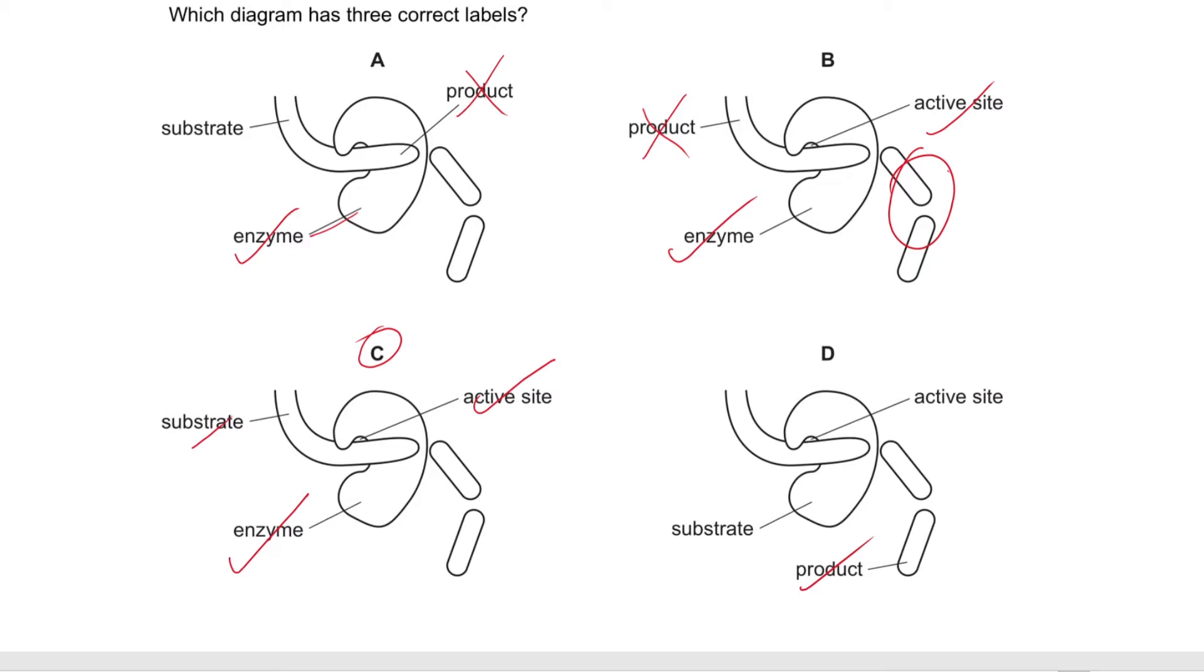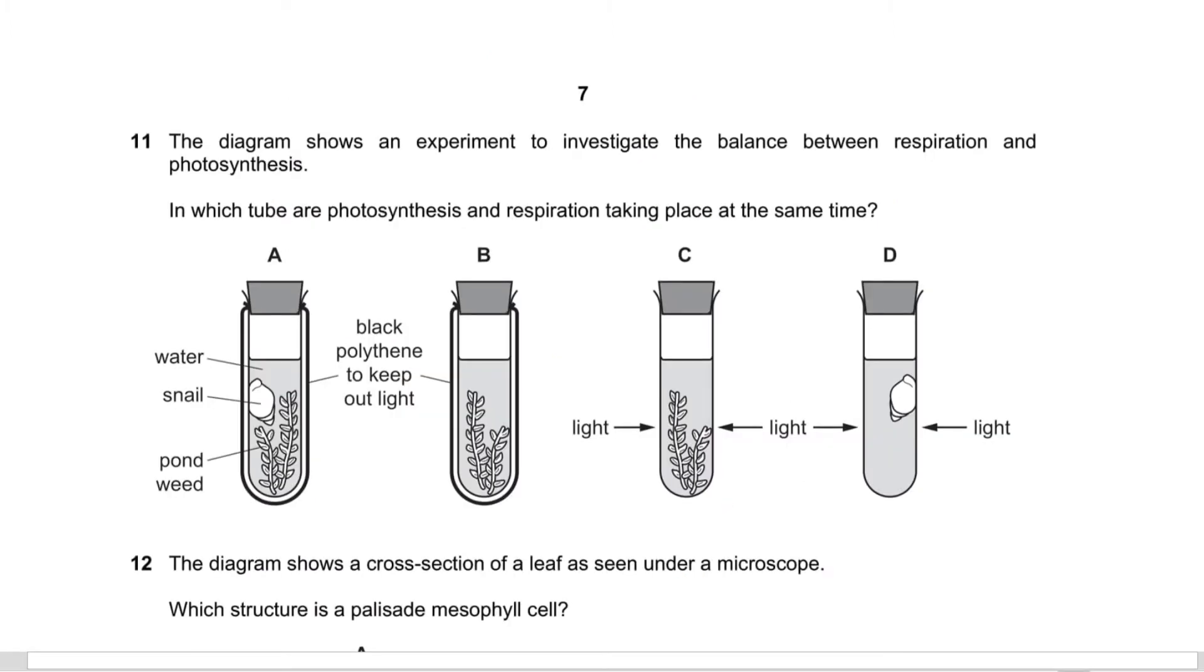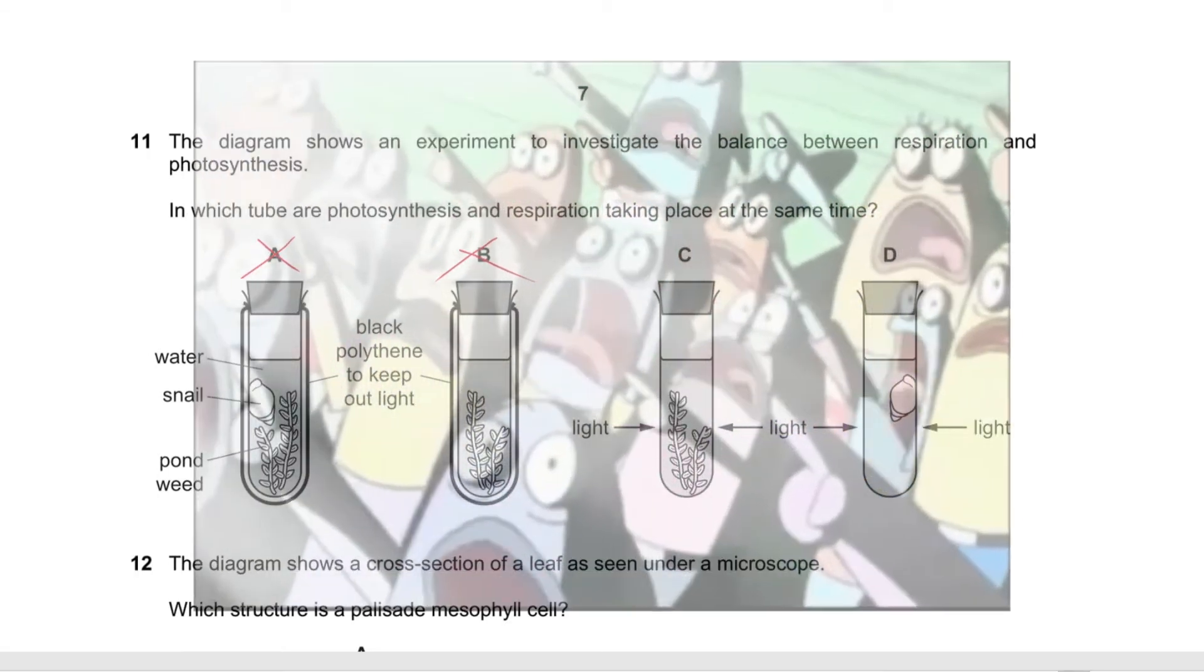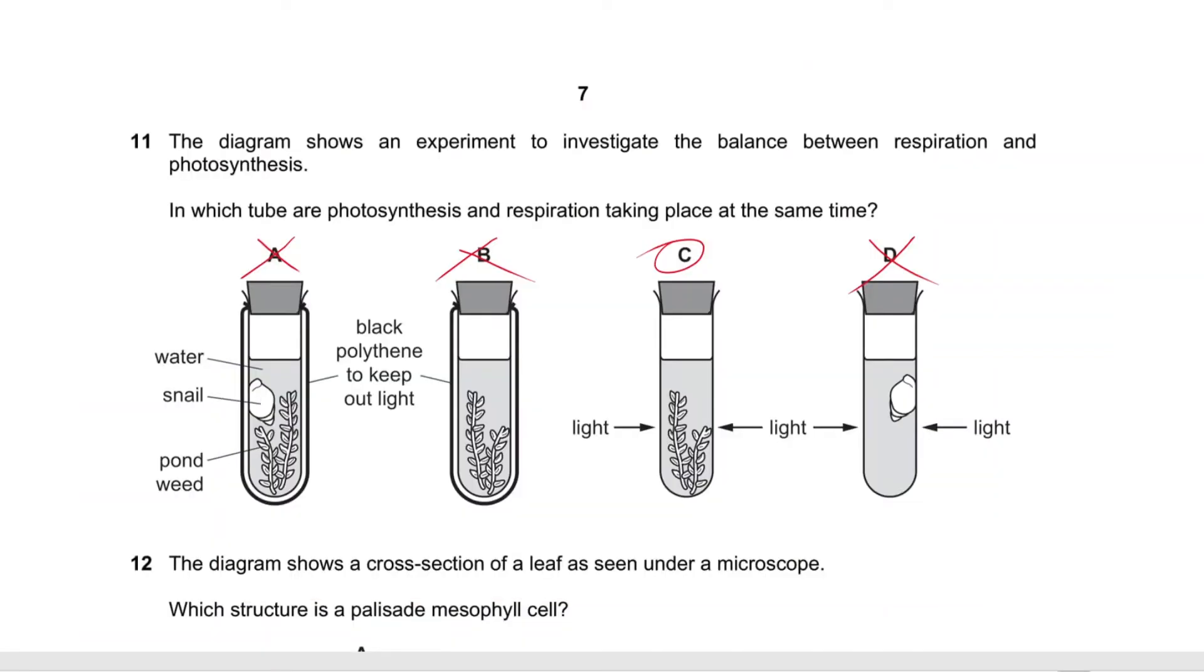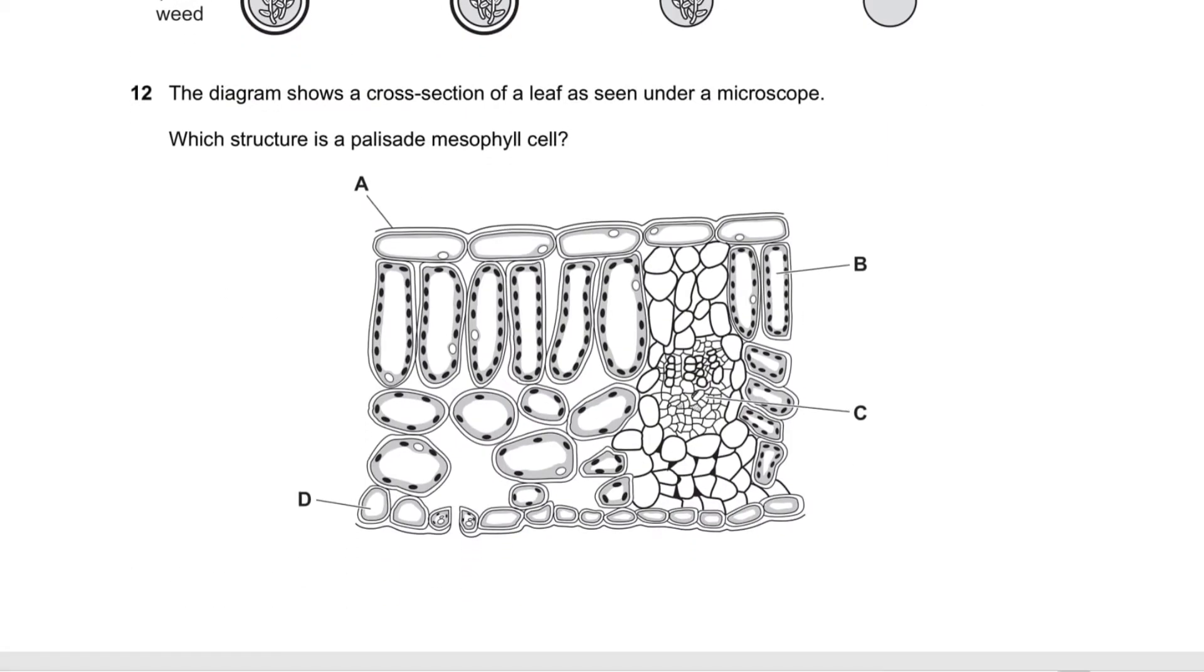Question number 11 says the diagram shows an experiment to investigate the balance between respiration and photosynthesis. In which tube are both photosynthesis and respiration taking place at the same time? Anything with the black polythene to keep the light out, photosynthesis is not taking place. And animals do not photosynthesize. It's the plant because remember that the plant is always 24/7 respiring.